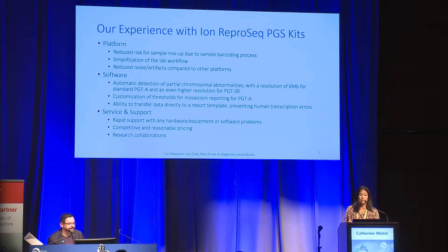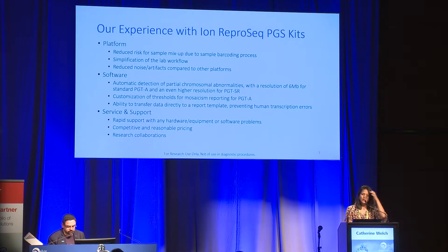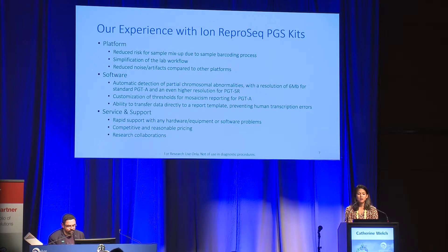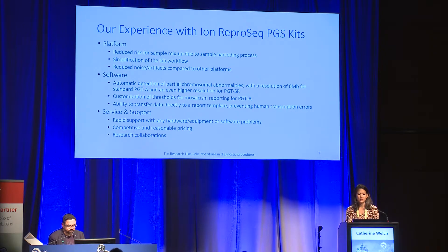We really enjoy the software that ION Torrent provides — not only the automatic detection of partial chromosome abnormalities and the higher resolution of six megabases for standard PGTA, and even higher for PGTSR, but also the customization of thresholds for mosaic reporting. We do report mosaicism at our lab, reporting the actual percentage that comes off the software. We also enjoy the ability to transfer data directly from the software to the report template, essentially copying and pasting, which helps prevent human transcription errors.